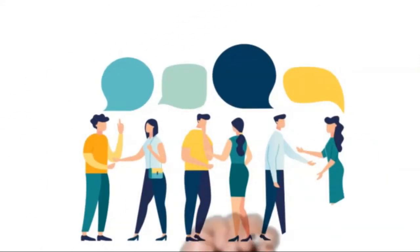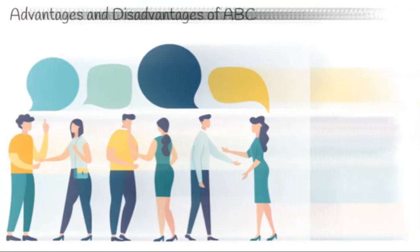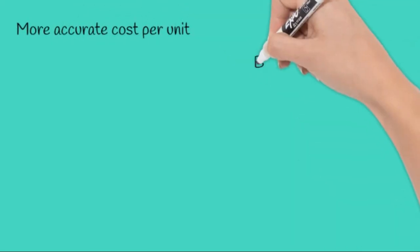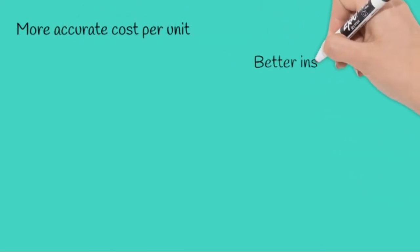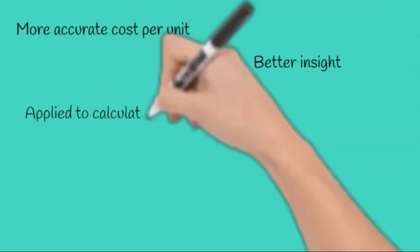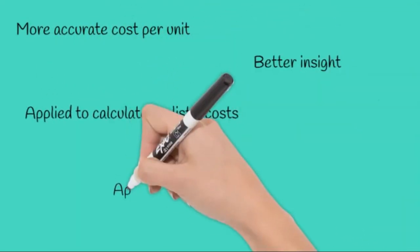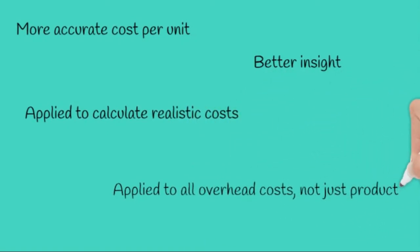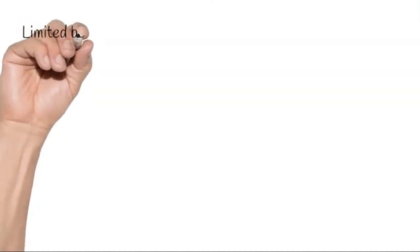The advantages of ABC costing: it provides a more accurate cost per unit. It provides better insight into what causes overhead costs in the first place. It recognises overhead costs are not all related to production and sales volumes only. It can be applied to provide more realistic costs in complex business environments. This ABC method can also be applied to all overhead costs, not just production overheads, and it can be used just as easily in service costing as in product costing.